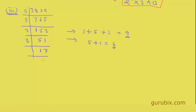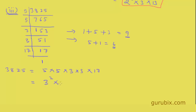We see that 17 is a prime number, so it cannot be divided except by itself or 1. So the prime factorization of 3,825 is complete. We can write it as 3² × 5² × 17. This is the solution of the third question.